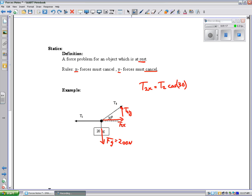T2x is equal to T2 cosine 30. I don't know what T2 is, but I can at least type cosine 30 into my calculator and get 0.866. So, T2x is going to be 0.866 T2, and I'll write that right on here.